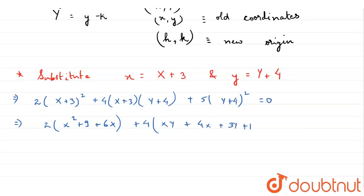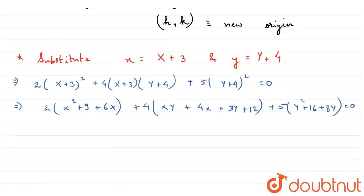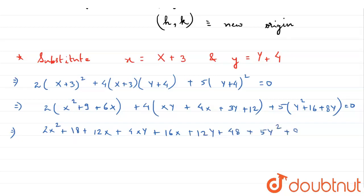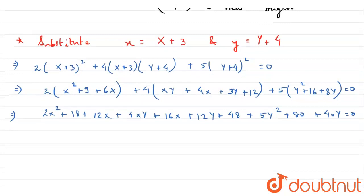And then we will expand (Y plus 4) whole square. So after this, we will multiply the factors inside their brackets and now we will group similar terms together.